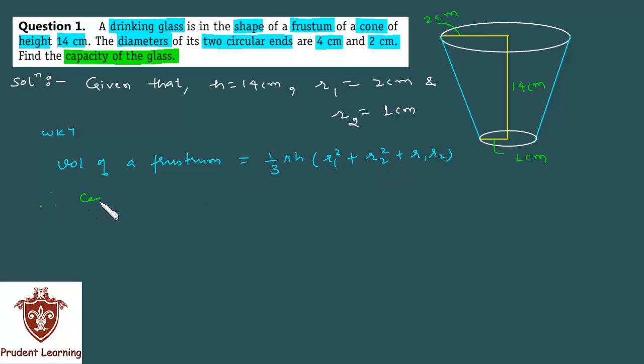Therefore capacity of the glass, that is volume of the frustum, is 1 by 3 into 22 by 7 into height 14 into (2 squared plus 1 squared plus 2 into 1).